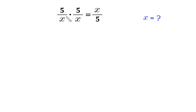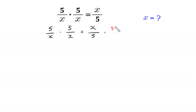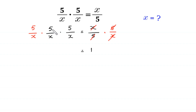We have 5/x times 5/x equal to x/5, and we multiply both sides by 5/x. On the left side, this 5 cancels with this 5 and this x cancels with this x. On the right side, we are left with 1, and 5/x times 5/x times 5/x becomes (5/x)³.